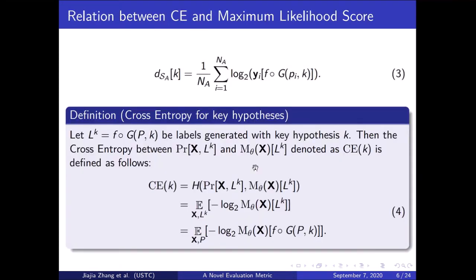When we talk about cross entropy in deep learning, it concerns the labels. However, in side-channel analysis, labels are generated from key hypotheses. Before giving a new metric, I will first redefine cross entropy in a slightly different way. Let L_K be the labels generated by the key hypothesis K. Then the cross entropy between the true distribution and the predicted distribution with respect to key hypothesis K, denoted as CE_K, is defined as follows. It is clear that this definition is compatible with the original definition of cross entropy if K is the right key.